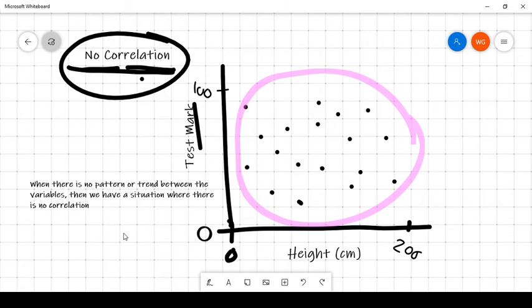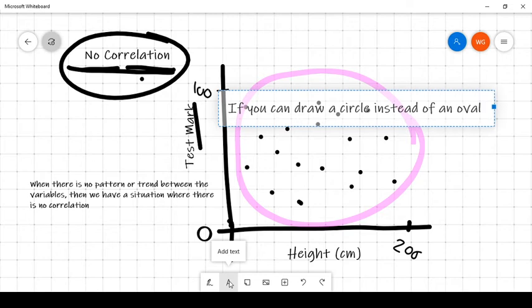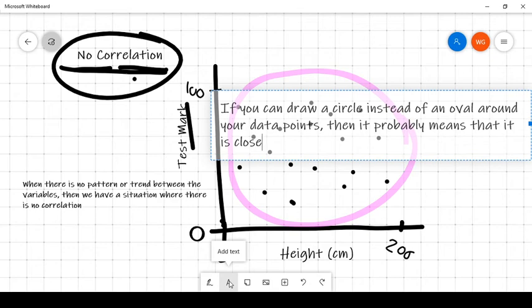Another thing we can say is that if you can draw a circle instead of an oval around your data points, then it probably means that it is close to being no correlation.